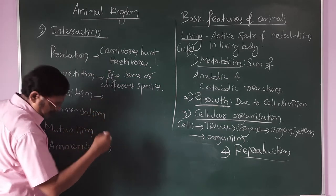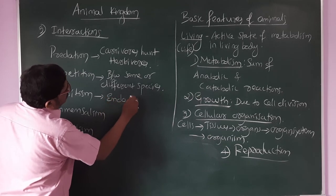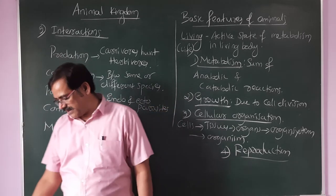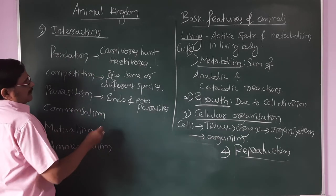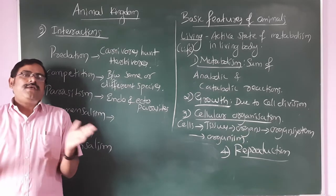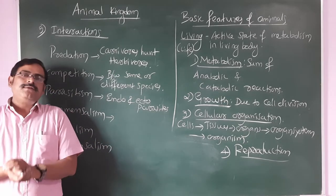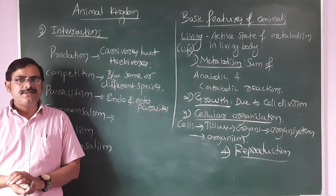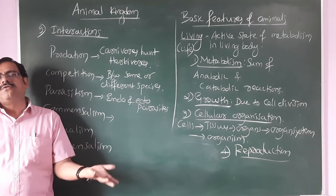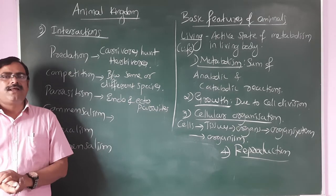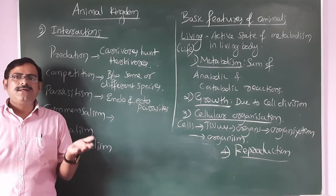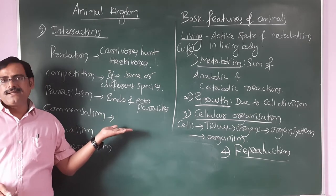Parasitism: parasites can be endoparasites or ectoparasites. Endoparasites — for example, Ascaris in the intestine, liver fluke in the liver, Plasmodium causing malaria in blood cells — these exploit their host inside the body. Ectoparasites include ticks, mites, and blood-sucking leeches, which live on the outside of the host.